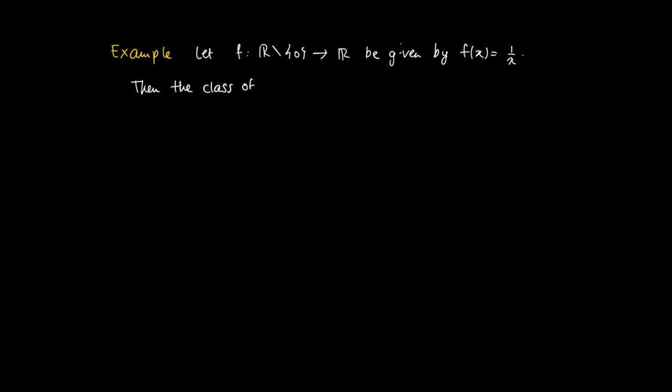The class of primitives for f is given by F(x). Capital F(x) is a primitive of the function f(x). Here we split up the domain: ln(x) + c₁ for x > 0, and ln(-x) is a primitive of 1/x for x < 0, but now we can take a different constant c₂.